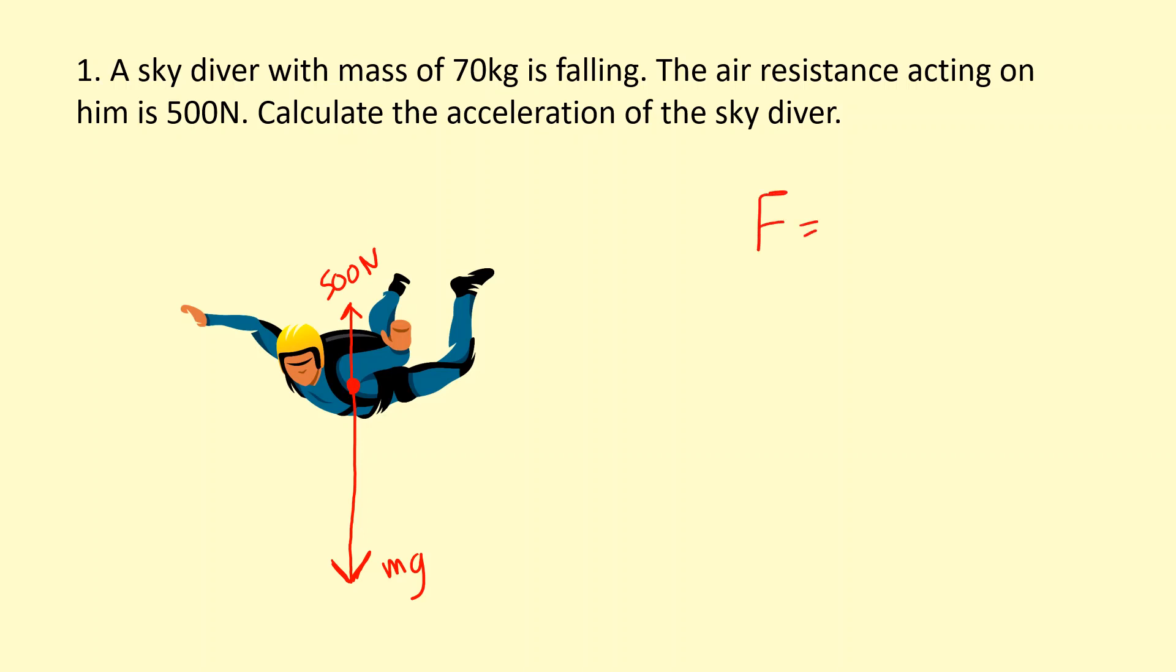So F equals ma. F is the resultant force, so mg is bigger, so I'm going to be 70 times 9.81 which is mg. I'm going to subtract the force in the opposite direction which is the drag force here, equals the mass times the unknown acceleration which we're trying to find. So that's 686.7 minus 500, and then divide that by 70 to get the a. So a equals 2.7 meters per second squared.